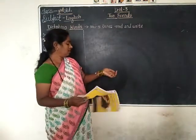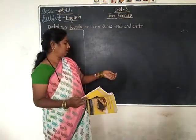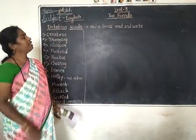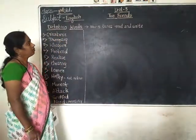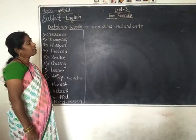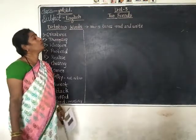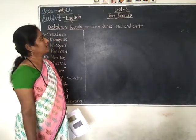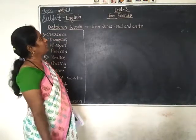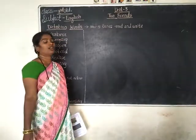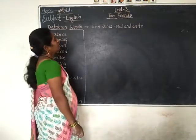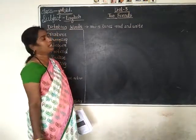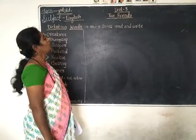Hello children, good afternoon. Now I am telling you about unit number 3. I already finished 2 poems and 2 lessons in 4 classes, and the test was also taken. Now I am starting unit number 3. The name of the lesson is 'Two Friends.'